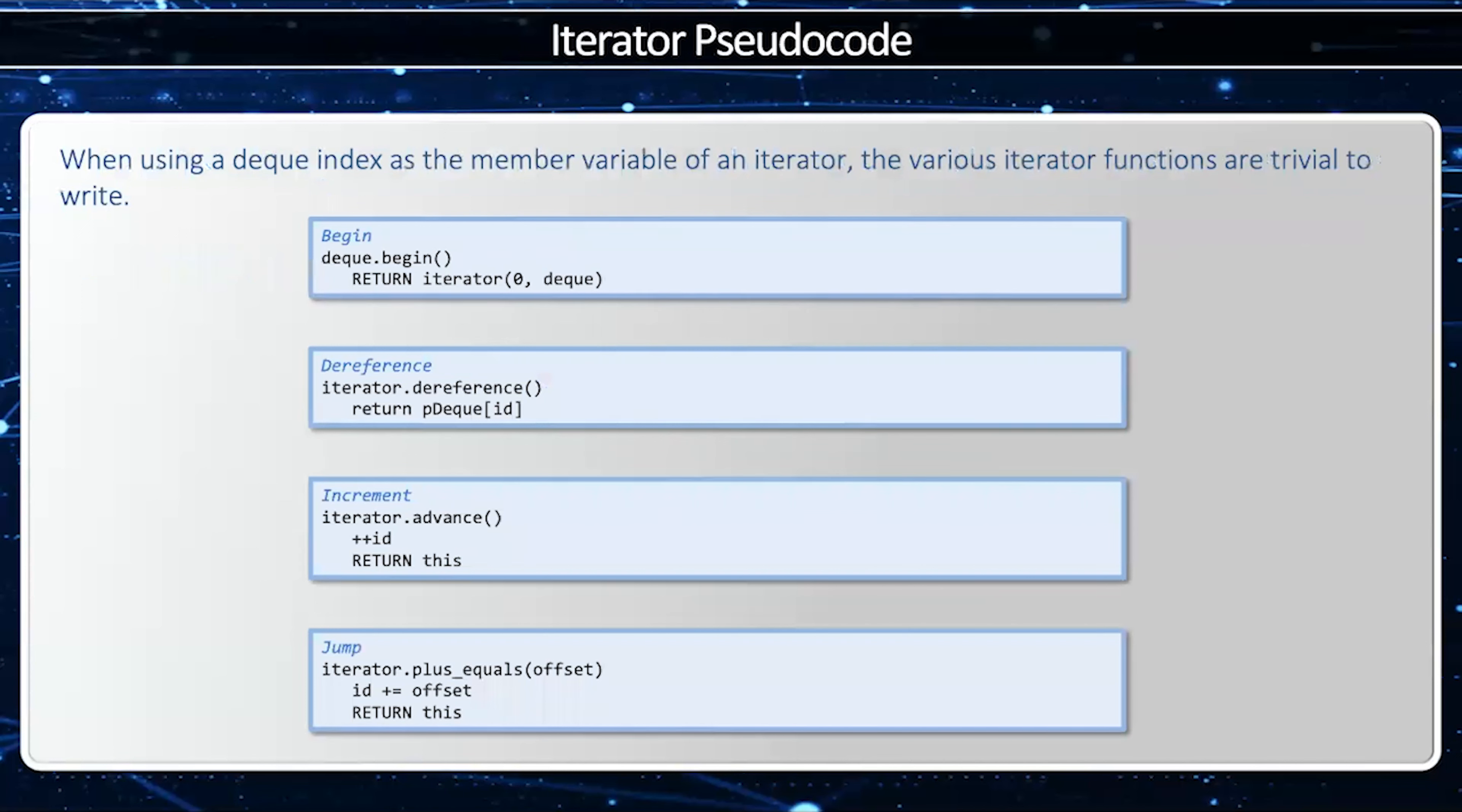Now with these two attributes, the deck index as well as a reference to the deck itself, it's actually very simple to implement the various iterator interfaces.